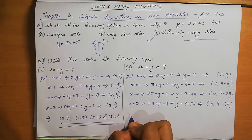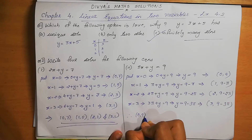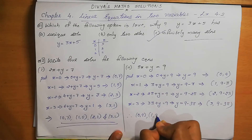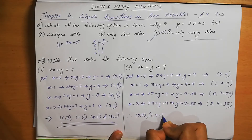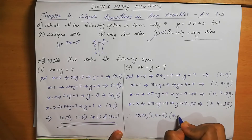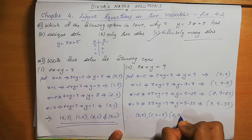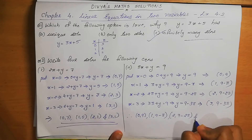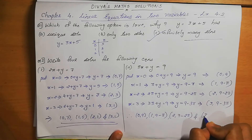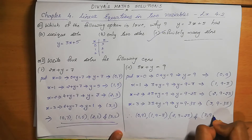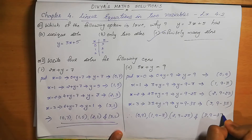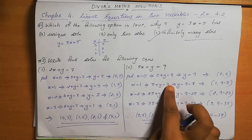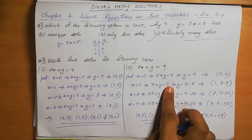Therefore, (0, 9), (1, 9 − π), (2, 9 − 2π), and (3, 9 − 3π) are the solutions of the equation πx + y = 9.